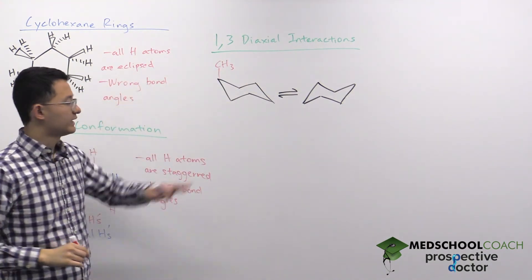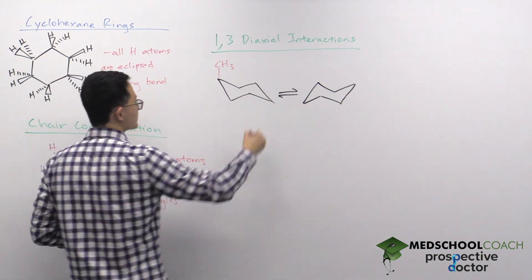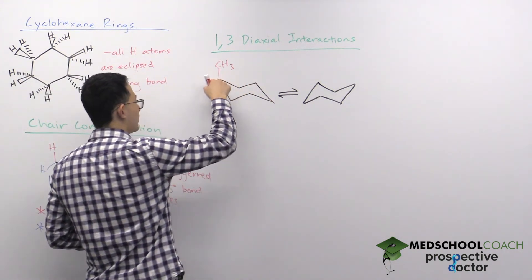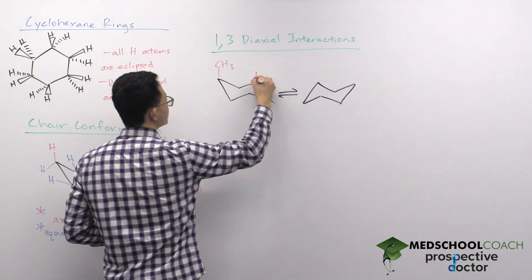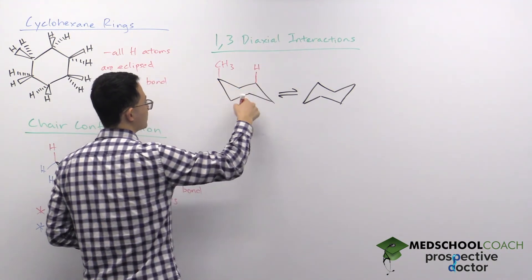The problem with having an axial substituent is that this is carbon 1, and two carbons away is carbon 3. You can also count two carbons in the opposite direction, so here's another hydrogen on carbon 3.